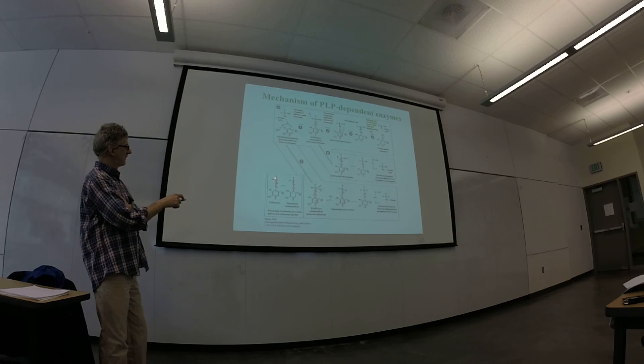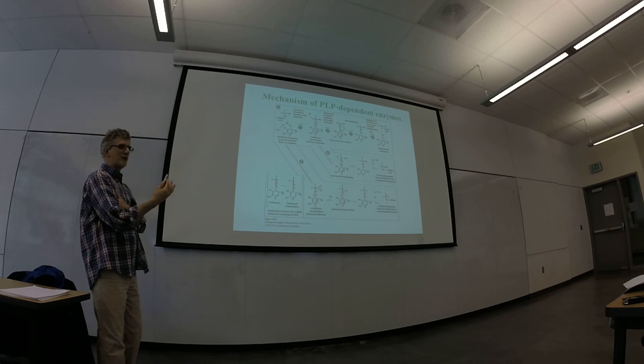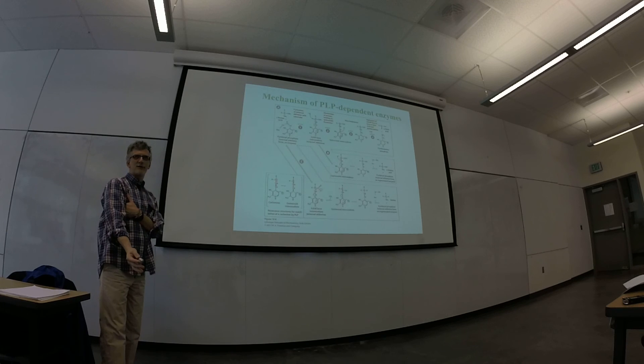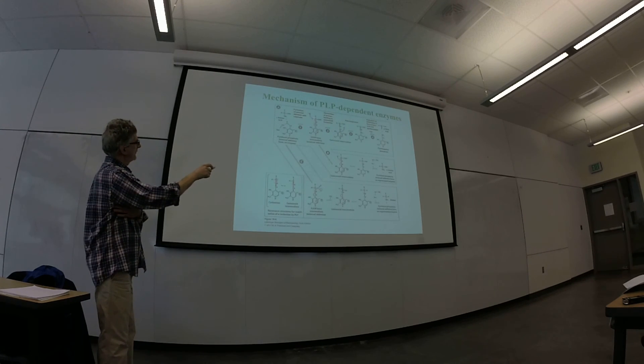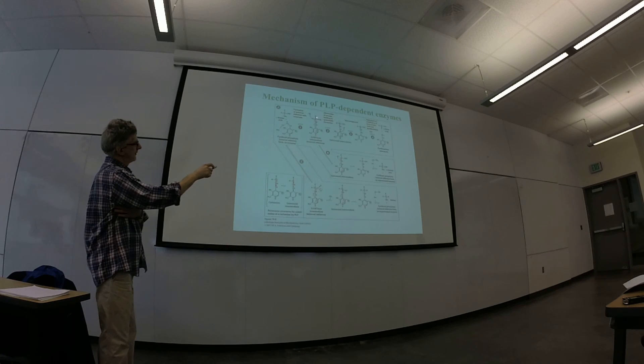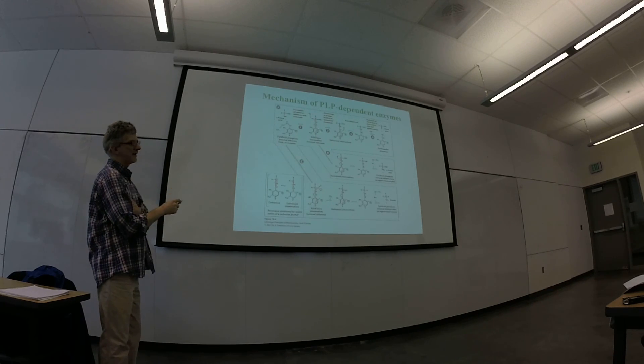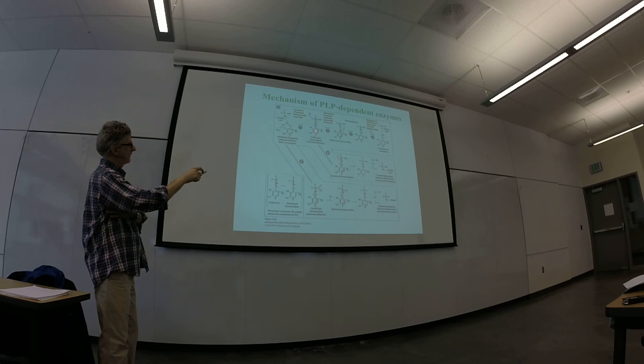you can sort of see electron, see this chain of electron pushing ending up on that end. So this is an electron sink to facilitate this abstraction of a proton. And that will allow us to form what's called a quinonoid intermediate.